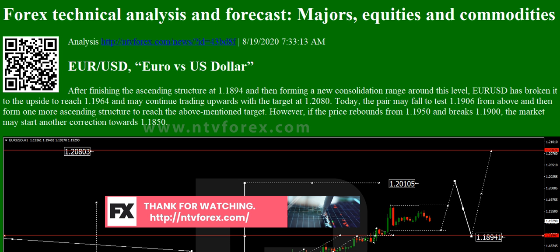S&P 500: After rebounding from 3,377.9, the S&P 500 index is moving upwards to reach 3,402.1. Later, the market may start a new correction towards 3,378.0 and then resume moving upwards with the target at 3,417.0. Subscribe to our channel to receive the news as soon as possible.